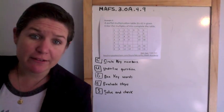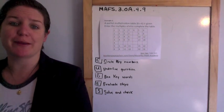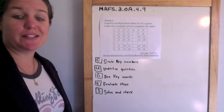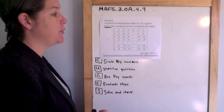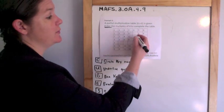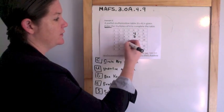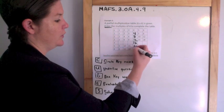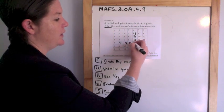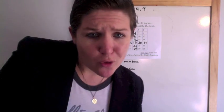Example five is the last one today, and it is a table item. It says a partial 6-by-6 multiplication table is given — enter the multiples of 4 to complete the table. So: 1 times 4 is 4, 2 times 4 is 8, 3 times 4 is 12, then 16, 20, 24. And the same going the other way: 4 times 1 is 4, 8, 12, 16, 20, 24. Watch a multiples song — the link is right here.